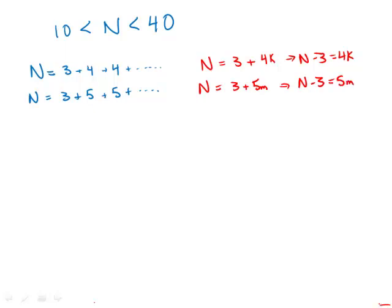So this is interesting. It means that N minus 3 has to be both a multiple of 4 and a multiple of 5. What are the numbers that are simultaneously multiples of 4 and multiples of 5? Well, those numbers are 20 and multiples of 20: 20, 40, 60, 80. But if we add 3 to this, then 40 plus 3 is going to be bigger than the range allowed. So the only number that would be allowed is 20 plus 3, or 23.